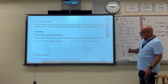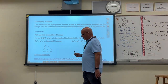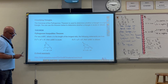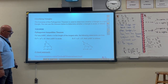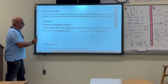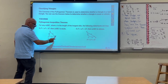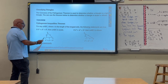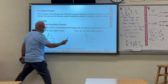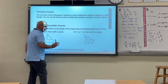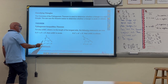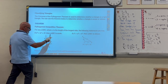Now, when the sum of the shorter sides squared is not equal to the longest side squared, two situations can happen: the sum is greater, or the sum is less than the longest side squared. When the sum of the two shorter sides squared is greater than the longest side squared, the triangle is acute. When it is less, the triangle is obtuse.